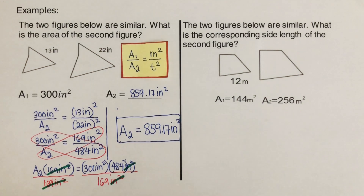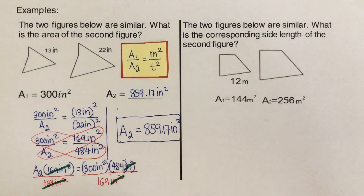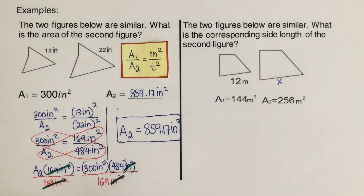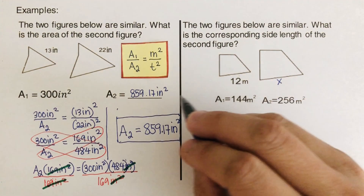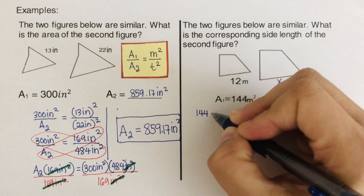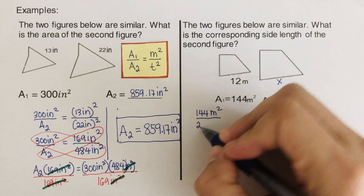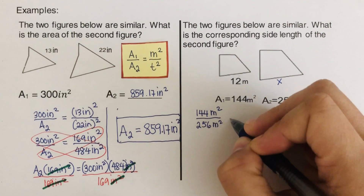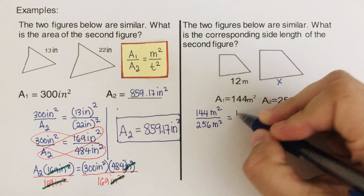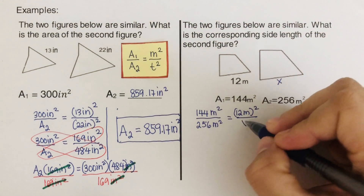Okay, let's go over the next problem. We need to find the length of the corresponding side, which we'll call x. We still use the same equation. A₁ is 144 meters squared, divided by A₂ which is 256 meters squared, equals M — the first side length — which is 12 meters squared, over x squared.